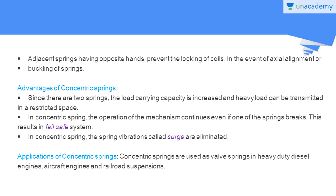Here we have the advantages of concentric springs. Since there are two springs, the load carrying capacity is increased and a heavy load can be transmitted in a restricted space. We use little space because we keep one spring inside the other. The concentric spring has a high load carrying capacity. Additionally, the operation of the mechanism continues even if one of the springs breaks, resulting in a fail-safe system — on the failure of one spring, the other spring provides continued support.